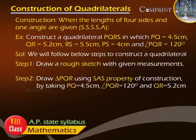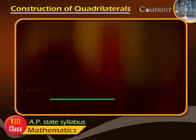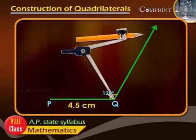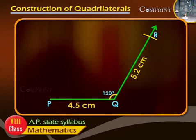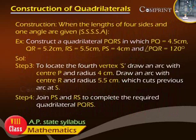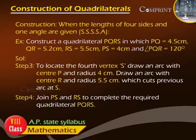Step 2: Draw triangle PQR using the SAS property of construction, by taking PQ = 4.5 cm, angle PQR = 120 degrees, and QR = 5.2 cm. Step 3: To locate the fourth vertex S, draw an arc with center P and radius 4 cm, and draw an arc with center R and radius 5.5 cm, which cuts the previous arc at S.